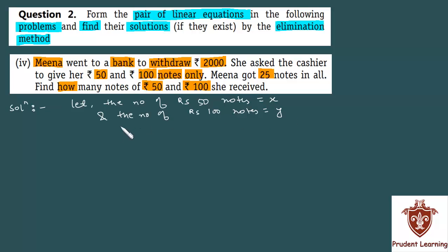Total कितने note मिले उसको, 25. The question gives that the total number of notes she received is 25, which means x plus y equals 25. This is equation 1. Now one more information